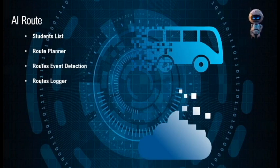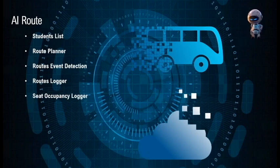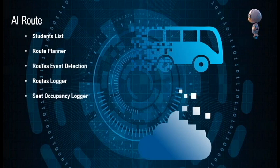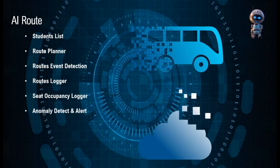Routes logger: The system logs every single moment — whether early or late in travel — and will send push notifications to parents. Seat occupancy logger: The overhead sensors detect the daily occupancy list and can also identify one-way users. This helps school administration, drivers, parents, and government authorities in case a student is locked in after a school travel journey. Anomaly detection and alerts include bus weight detectors, weather monitors, and glass break detectors to identify anomalies.